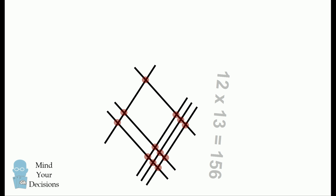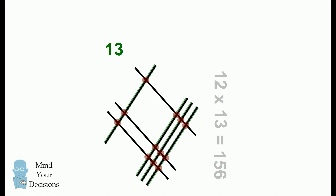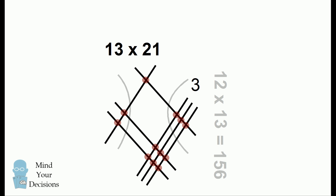Let's look at the lines going to the upper right. Here we have one line and then three lines, so that means the first number we're multiplying is 13. For the lines in the other direction, we have two lines followed by one line, which represents the number 21. So this diagram represents 13 times 21. We can again group the intersections that are vertically aligned: three on the right, seven in the center, and two on the left. That gives us our answer that 13 times 21 is 273.